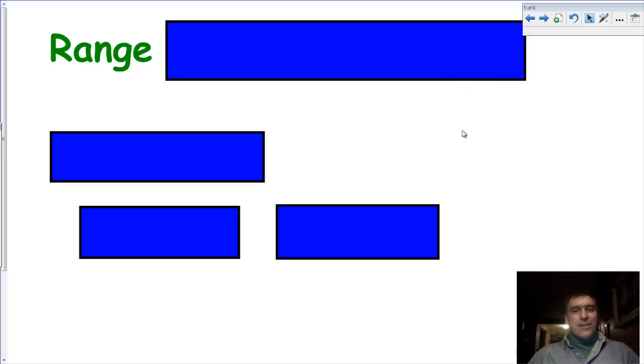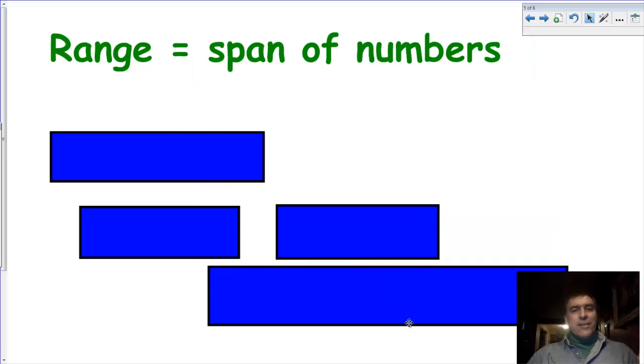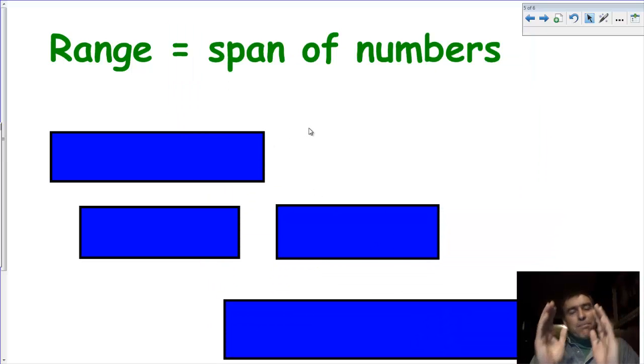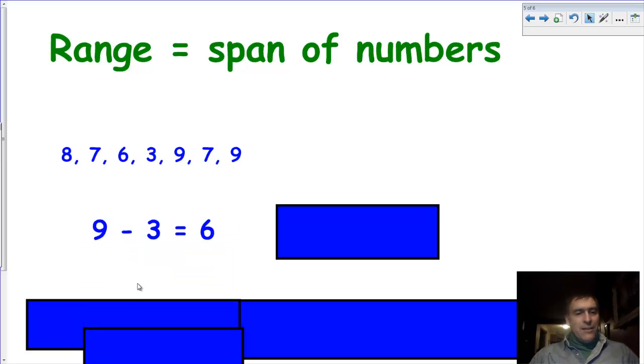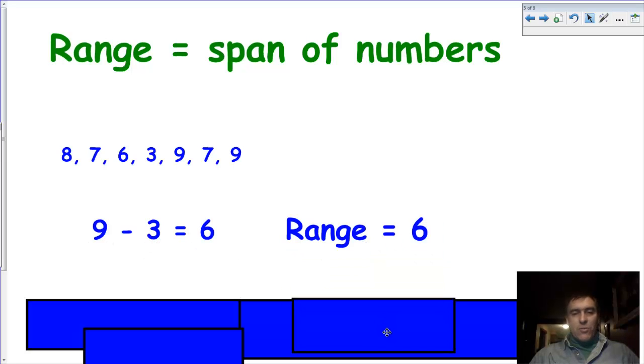Just one more to go, and that is the range. Not home on the range, definitely not. But the range is the span of numbers. What is the biggest number subtracting the smallest number? And that gives us the whole range of numbers that we're dealing with. So again, let's look at our numbers here. What we take is our biggest number, which is 9, and we subtract the smallest number of the data set, which is 3. 9 minus 3 is 6, so our range is 6.